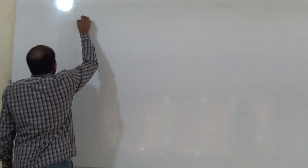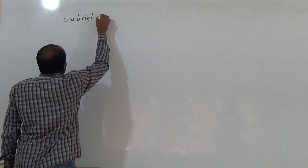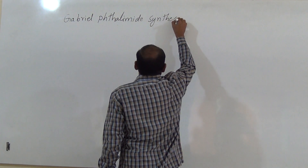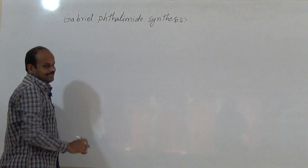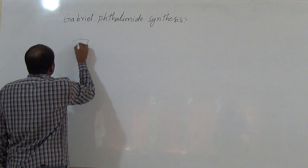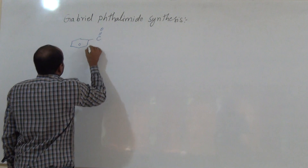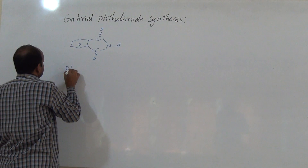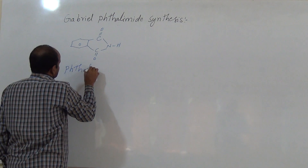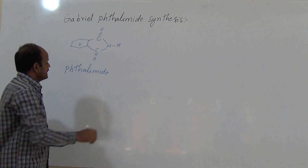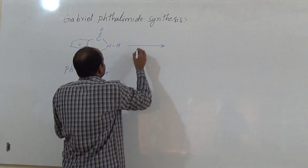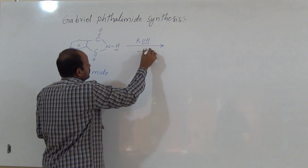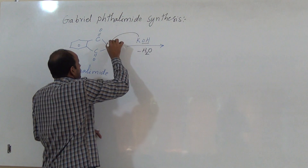The next method is Gabriel Phthalimide synthesis. In this Gabriel Phthalimide synthesis, we take a phthalimide — that is C6H4(CO)(CO)NH. This phthalimide is reacted with potassium hydroxide (KOH). Then H+ and OH- are removed as H2O, and K+ attacks on nitrogen.